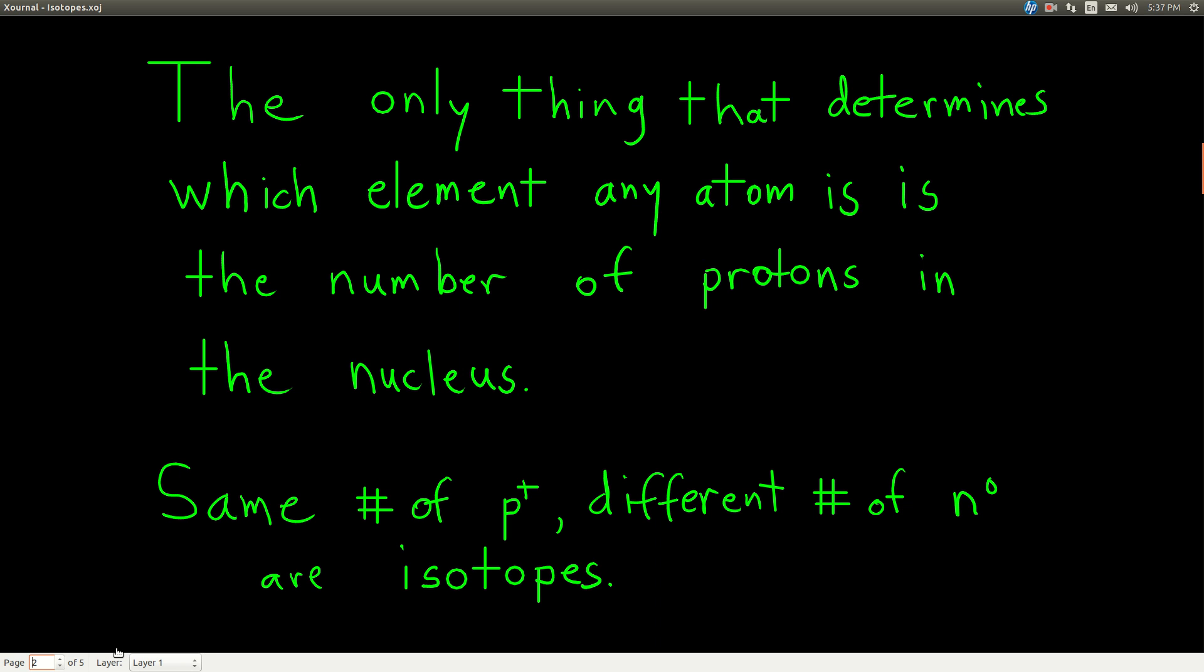If that's the case, we say those two atoms are isotopes of each other. Isotopes are atoms that have the same number of protons, and thus are the same element as each other, but have different numbers of neutrons, and thus have a different mass.